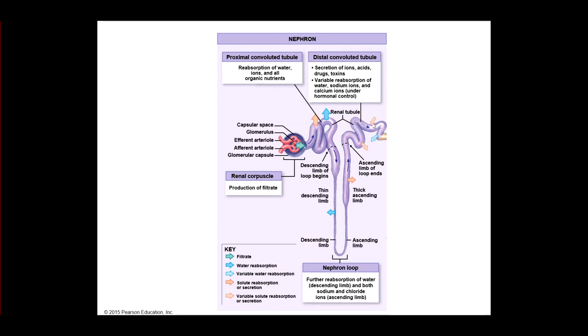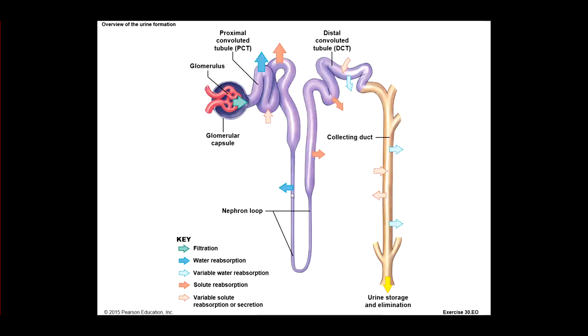See this arrow here? We're adding something into the distal convoluted tubule. So like I said, maybe hydrogen ions, maybe potassium ions, things like that, different types of drugs or toxins. That's going to be called secretion. Here's another blowup of that.